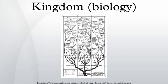In biology, kingdom is the second highest taxonomic rank below domain. Kingdoms are divided into smaller groups called phyla.